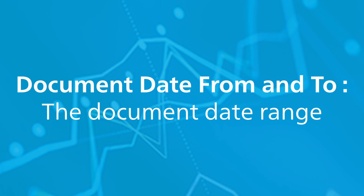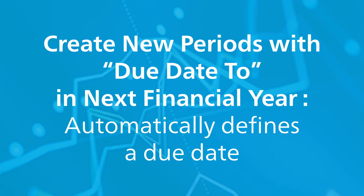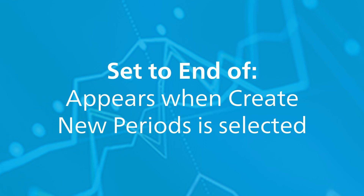The document date from and to field defines the document date range. The create new periods with due date to and next financial year field allows you to automatically define the due date for a posting period to be set up at the end of the user-defined month of the next fiscal year. The set to end of field appears when create new periods with due date to and next financial year is checked.